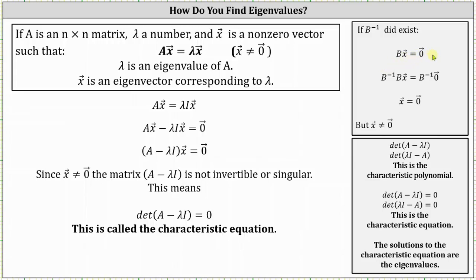There would be some inverse matrix B such that if we multiplied both sides of the equation by B inverse, we would get vector x equals a zero vector. But by definition vector x can't be the zero vector, and therefore we have a contradiction, which verifies that the matrix that is the difference of matrix A and lambda times the identity matrix is not invertible or singular.